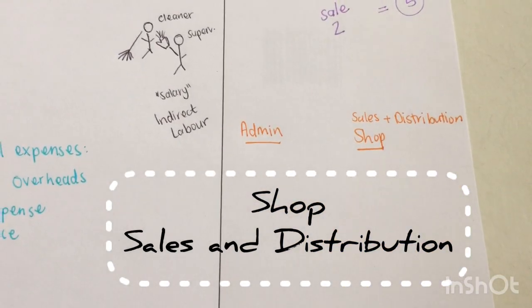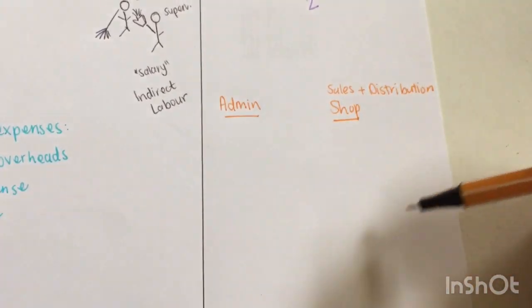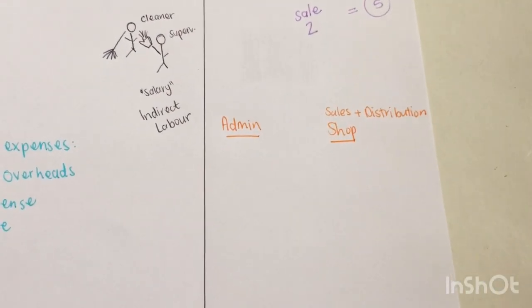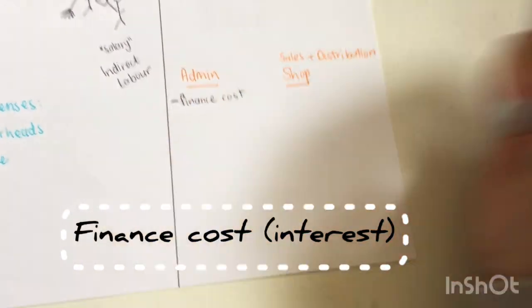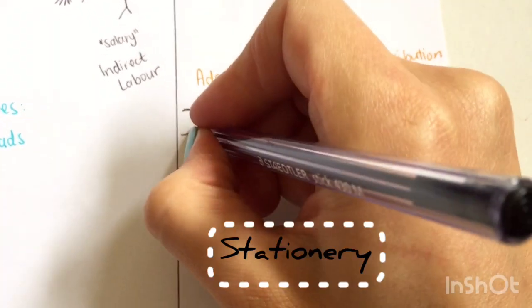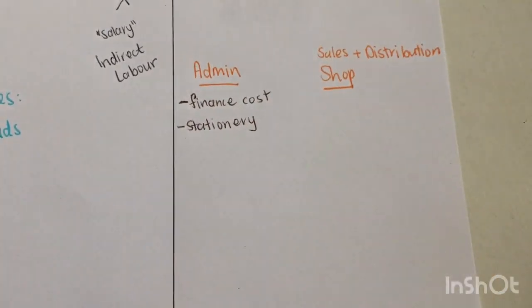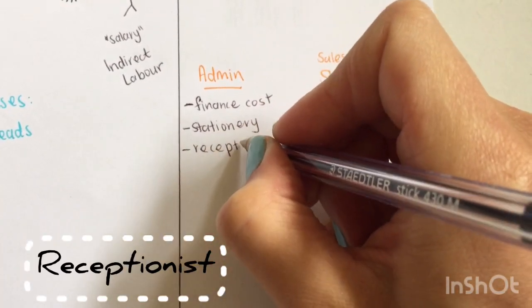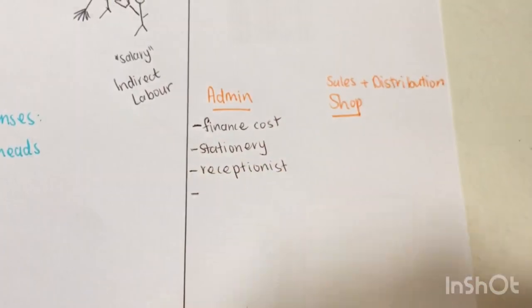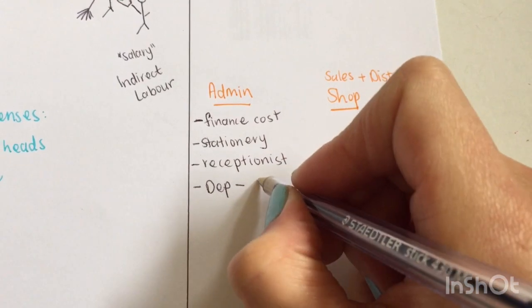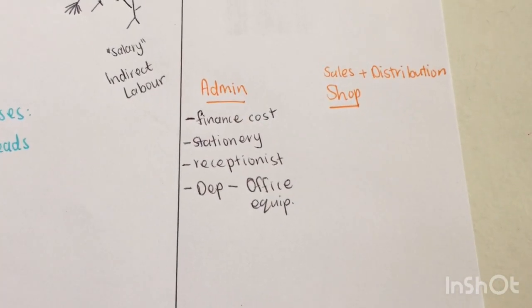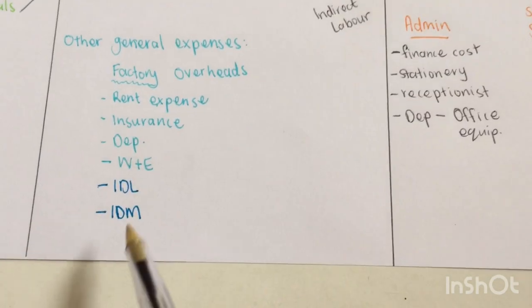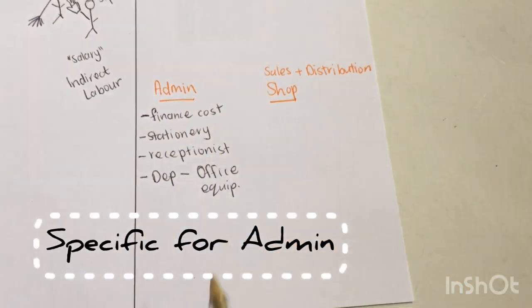The shop is referred to as sales and distribution. The only thing that happens in here is we will have general costs to pay, very similar to what I pay in the factory, but now there will be specific things extra. Any finance cost will be part of admin. Any stationery fee will be part of admin. A receptionist fee, and then any depreciation or any other general expenses for—and this is now very important—office equipment will go into admin. Then we'll also have rent expense, insurance, water, electricity, and everything, but these costs are specifically only for admin.